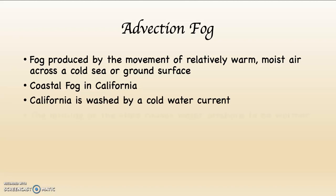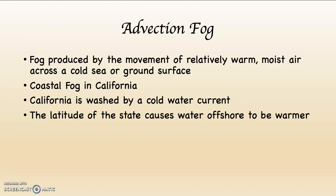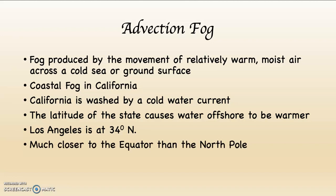California is washed by a cold water current. If you consider the latitude of the state, the offshore environment is significantly warmer than the area right along the coastline, because that cold water current comes from the north — from Alaska. Our latitude in Los Angeles is 34 degrees north, so we're much closer to the equator than to the North Pole, which means our water should be warmer. But the water right along the coastline is chilly. If you go to Huntington Beach during the winter and watch people surf, everybody's in a wetsuit because the water is cold.